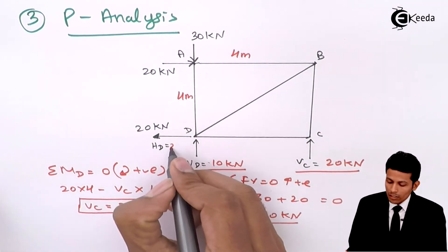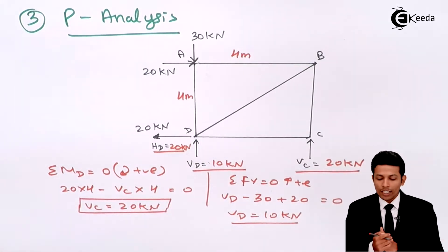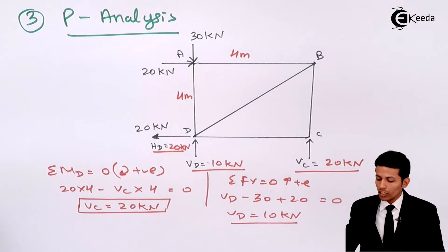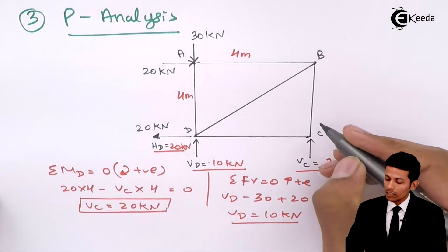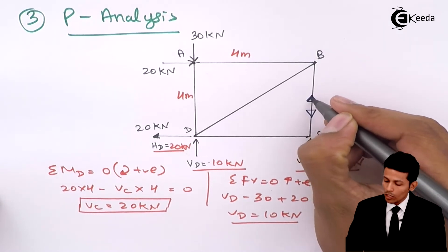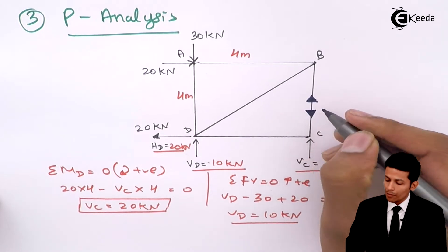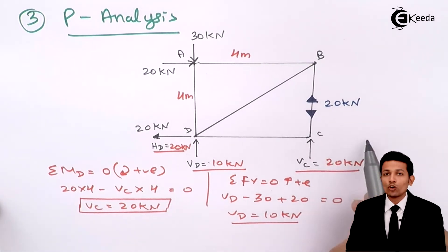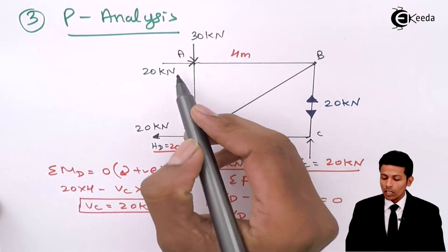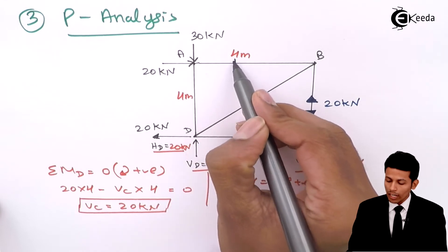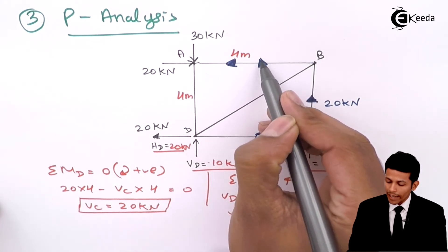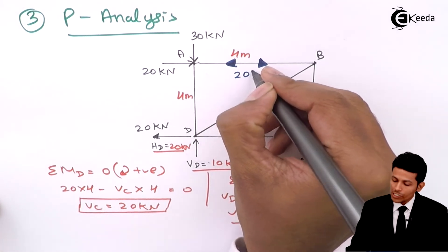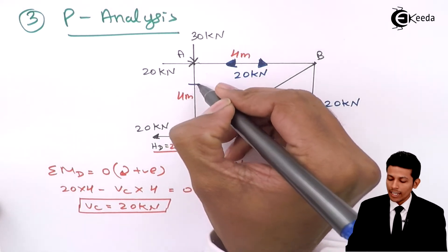Now let's perform the P-analysis shortcut. Since the 20 kN force acts horizontally, the opposing member force is also 20 kN with two arrows pointing away, meaning compression, so we write minus 20 for member AB. At joint C there is no horizontal load, so that member force is zero. The member with 20 kN compression is noted, and the 30 kN vertical gives member AD also in compression.